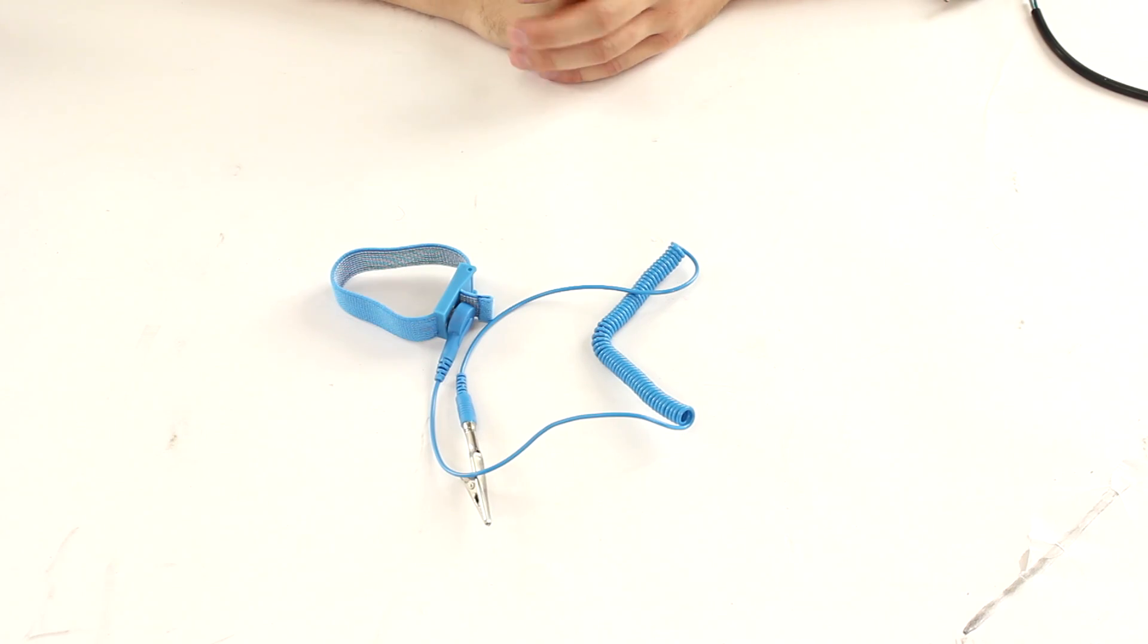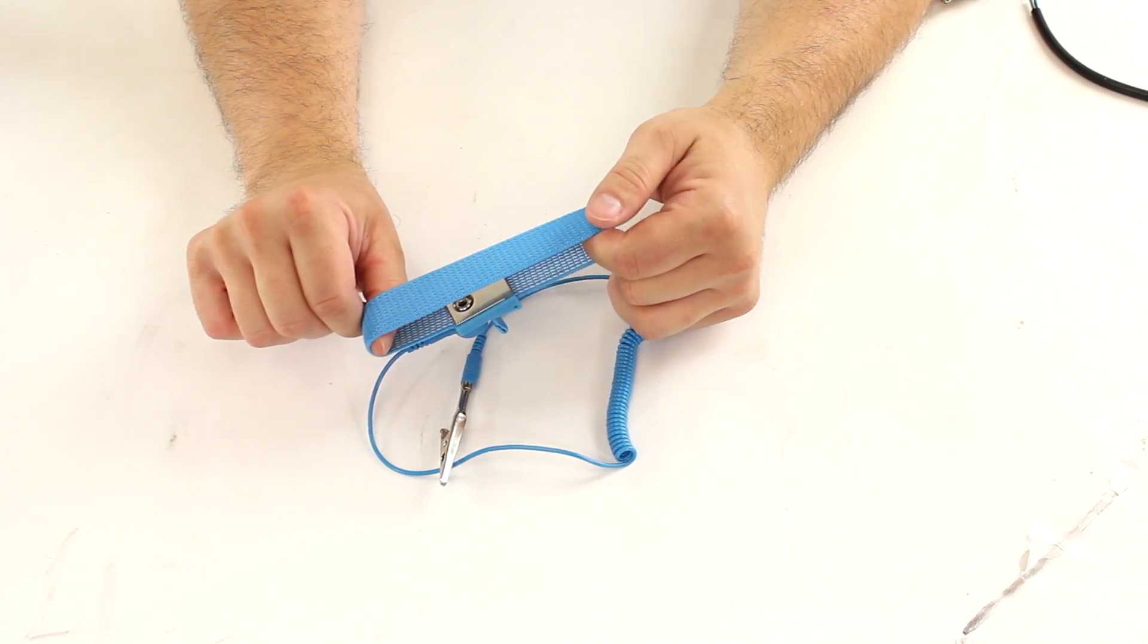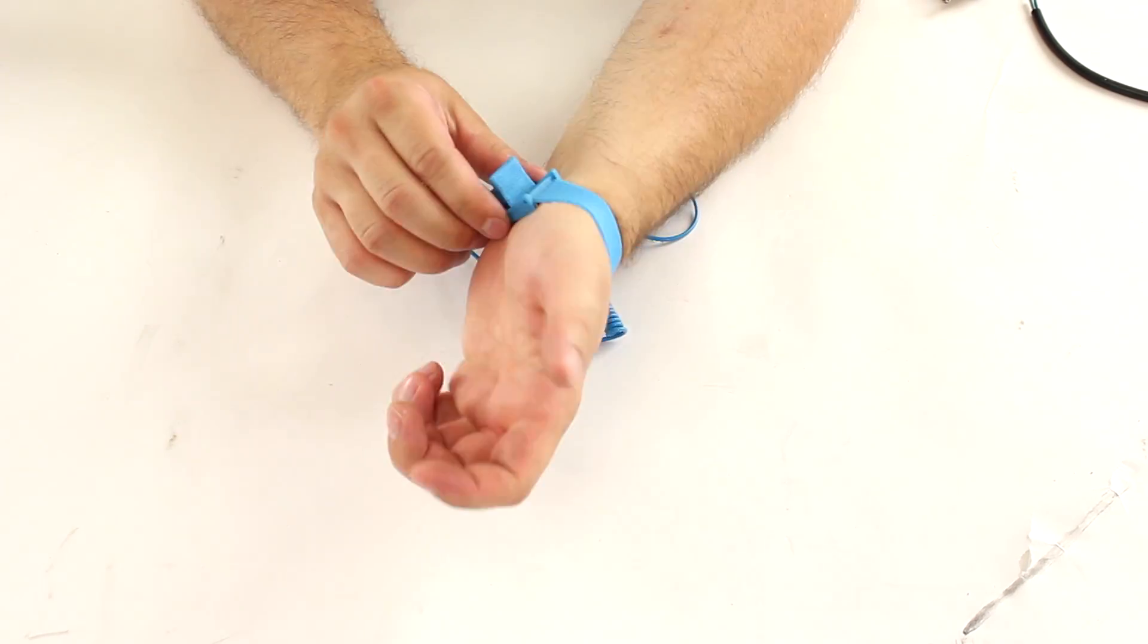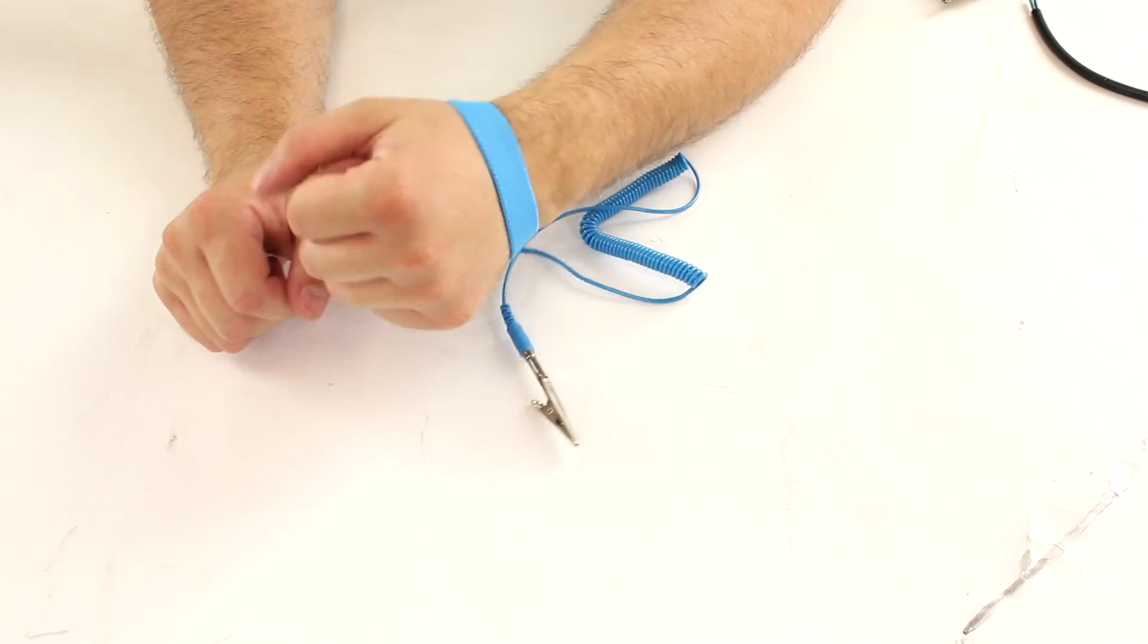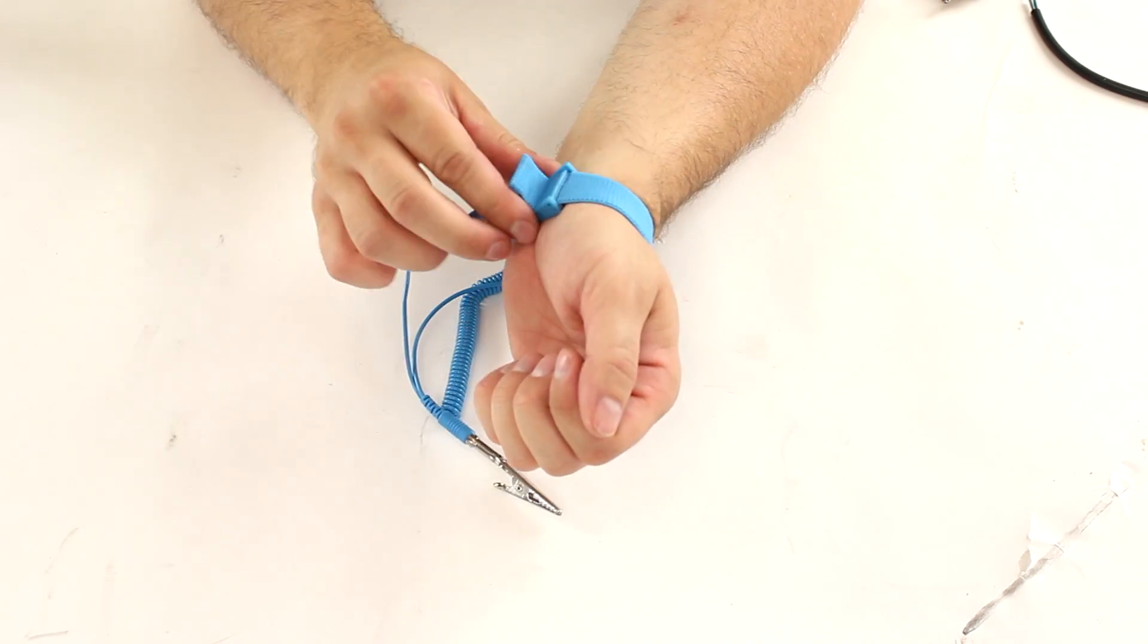Here is a look at our anti-static wrist strap. It comes with a flexible strap, so once you get it set to the right size, you can slide it onto your wrist. It should fit snug, but not too tight. This way it makes good contact with you and helps to dissipate any static in there.